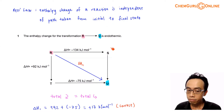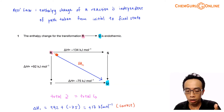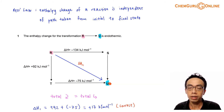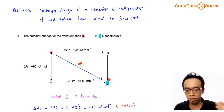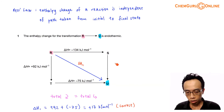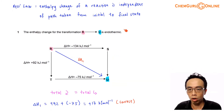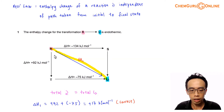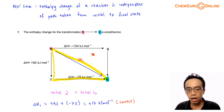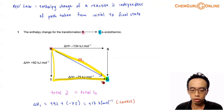So Hess's law tells us that the enthalpy change for R to U directly equals the enthalpy change for R to T then T to U, because it is independent of the path taken from the initial to the final state. This also means the enthalpy change for R to U equals the enthalpy change for R to S then S to U. But we don't have information involving S to U, so we focus on the relationship using R to T to U.